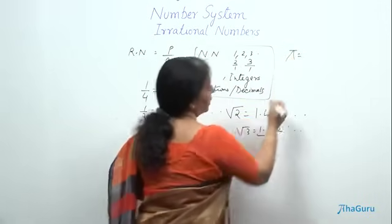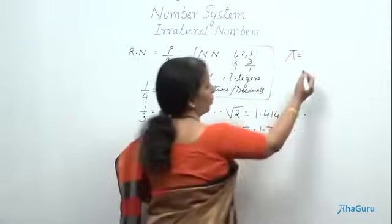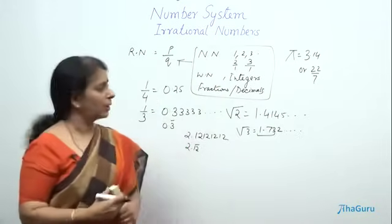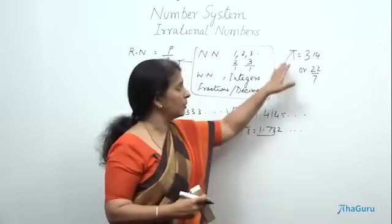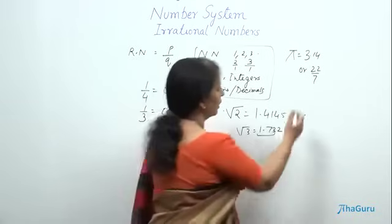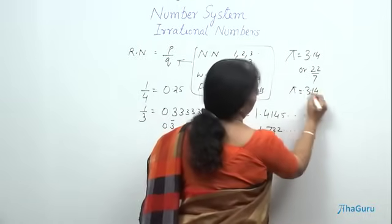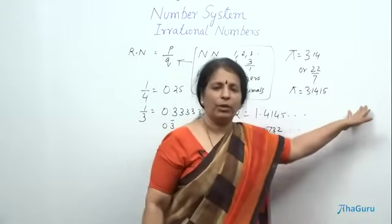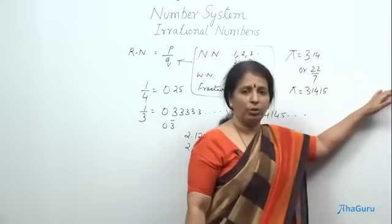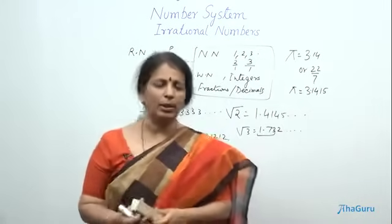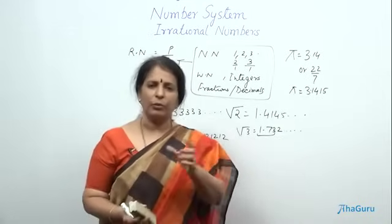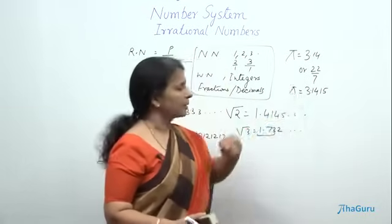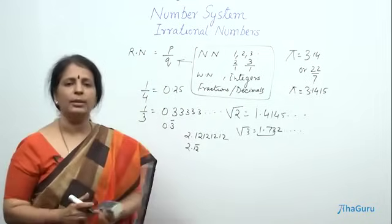Our most famous number π, which we always take as 3.14 or 22 by 7. In this form, these are rational numbers. But this is not the actual value of π. Pi is 3.1415... and it just goes on. Computers have tried to find millions of places and found that there is no pattern, no repetition of any digits in a particular pattern. π, root 2, root 3 are all irrational numbers.